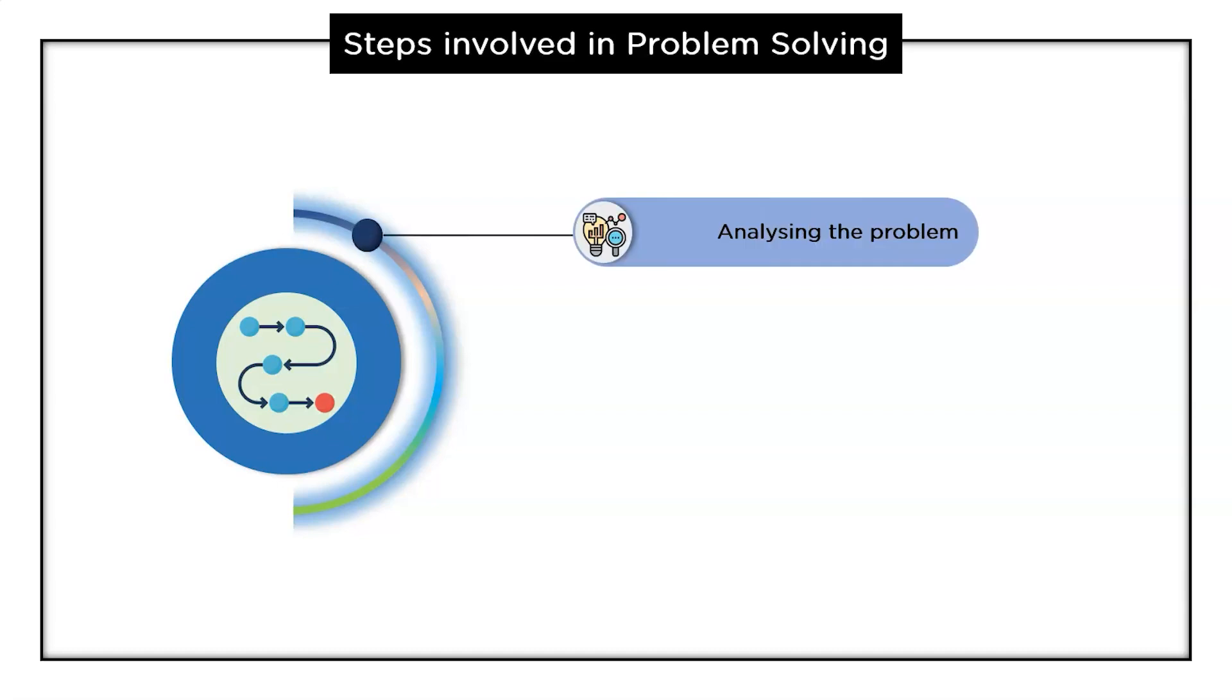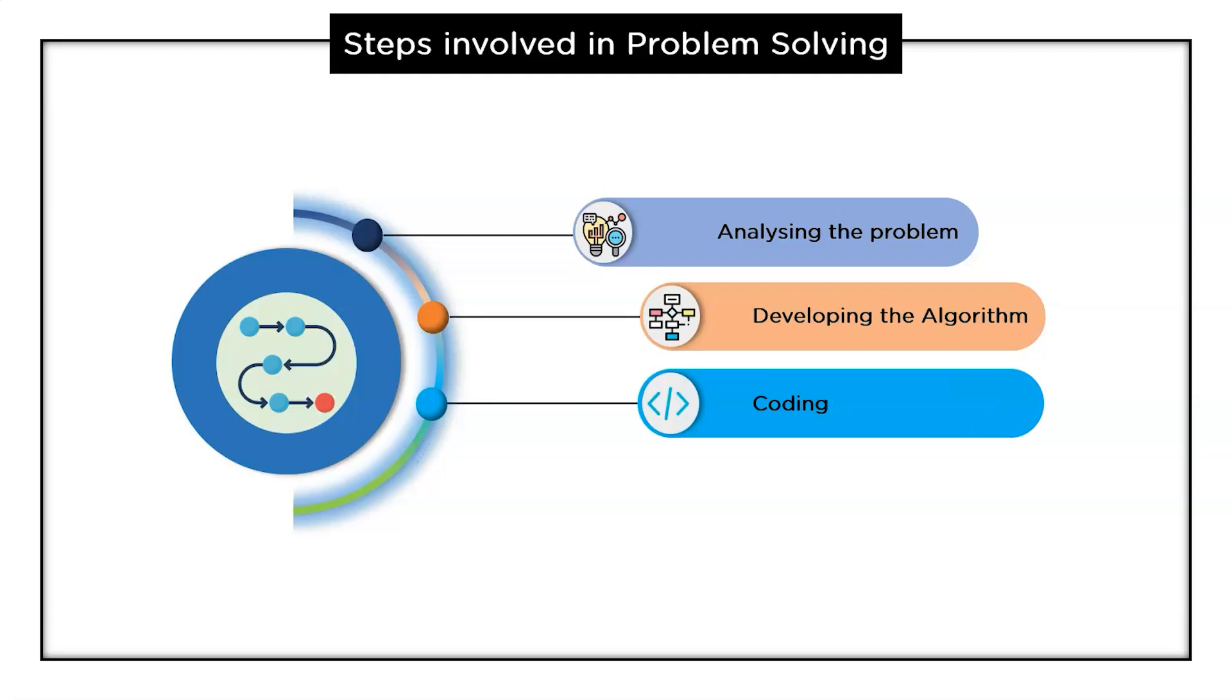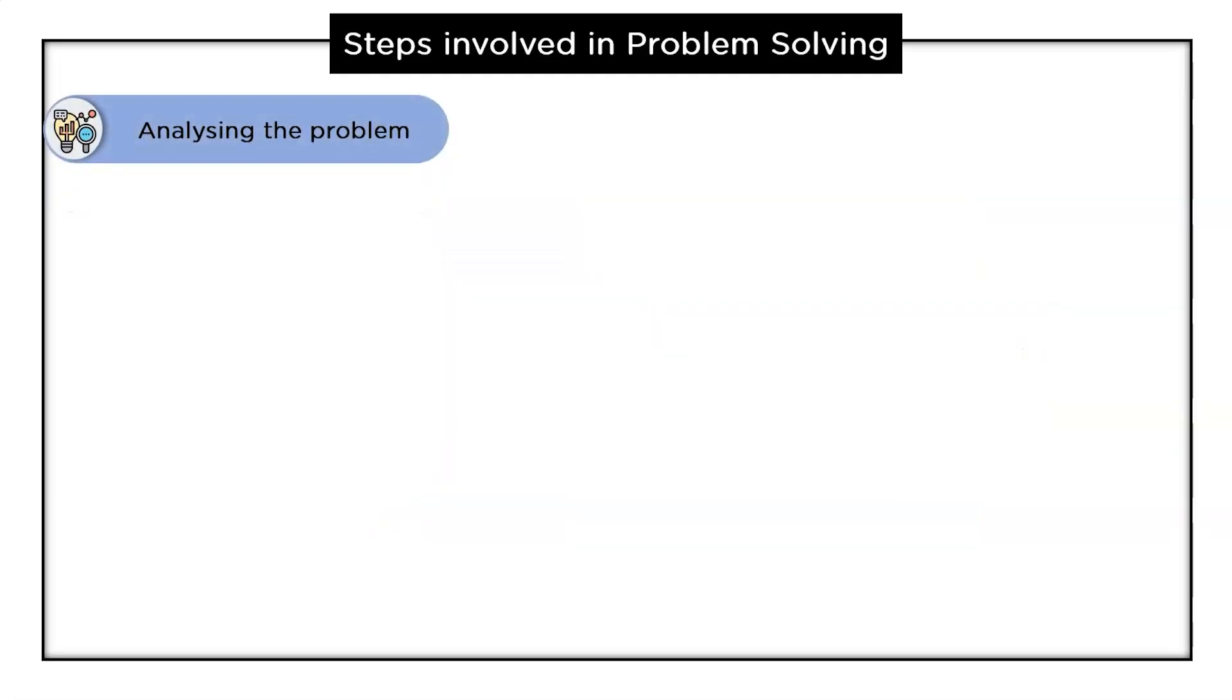So these are basically divided into four categories. The first one is analyzing the problem. Next is developing an algorithm. Followed by that we have coding, and then we have testing and debugging. Let's walk through them in a deeper and more detailed way.